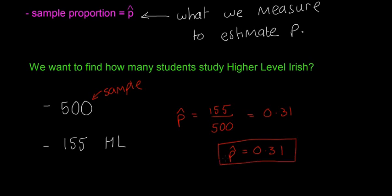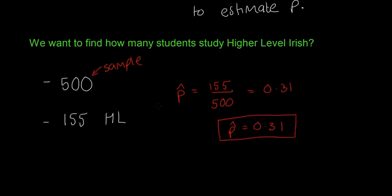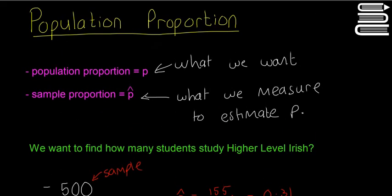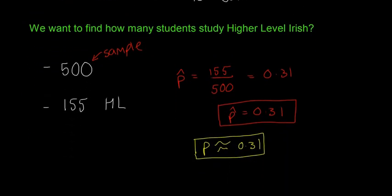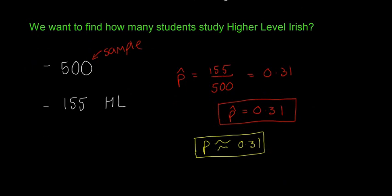So basically what you're doing then is you're saying that we can estimate that P, which is the population proportion, is about equal to 0.31. So about 30% of people in Ireland study higher level Irish. So this is really just an estimate just to show you how the population and the sample proportion work. So that's what we're trying to guess, how many people in Ireland actually do it, and we know this for certain because we asked 500 people.